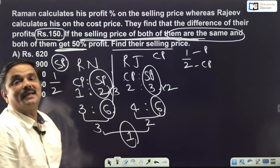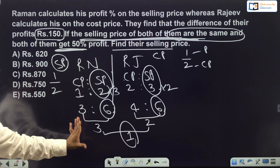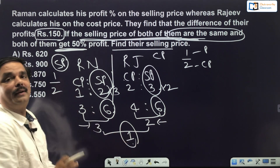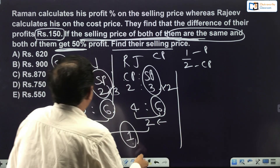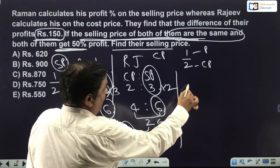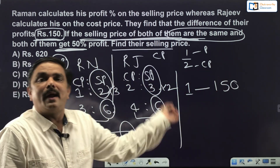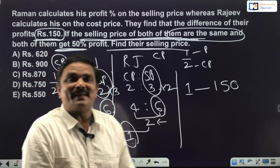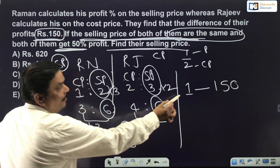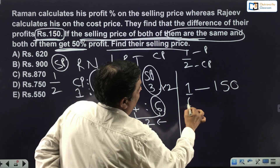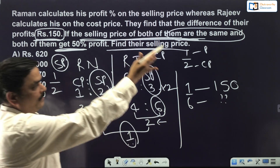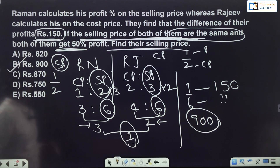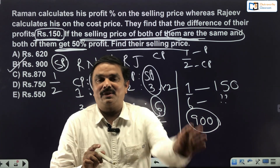The selling price corresponds to 6 parts. If 1 part = 150, then 6 parts = 6 × 150 = 900. The selling price is 900 rupees. The answer is option B: 900. This method lets you solve such questions within seconds once you understand the basics. Basics are very important — in our regular course I taught profit and loss basics for over an hour.